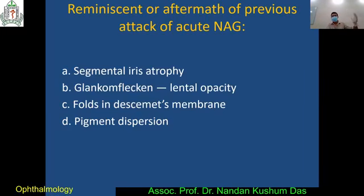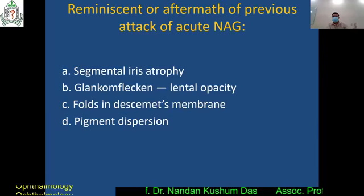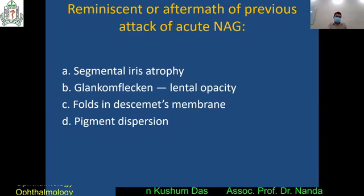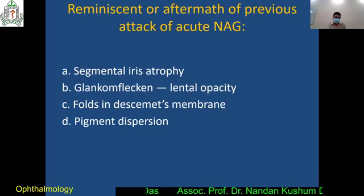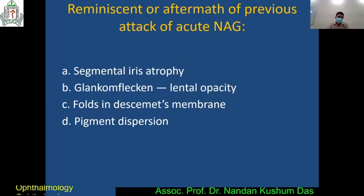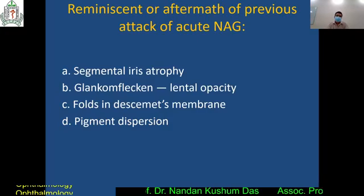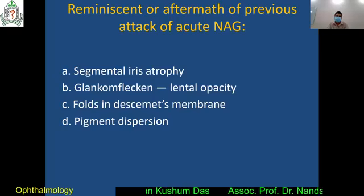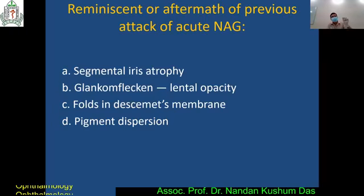Suppose a patient suffered from acute narrow-angle glaucoma and after six months comes to the OPD. As an ophthalmologist, what signs help diagnose a previous attack of acute narrow-angle glaucoma? There is a particular term — the aftermath of a previous attack. Important findings may include: Descemet's membrane changes, pigment dispersion, and glaucomflecken. Try to remember what are the aftermath findings of a previous attack of acute narrow-angle glaucoma.